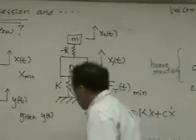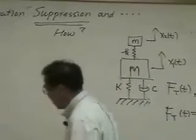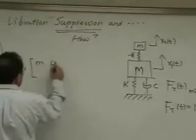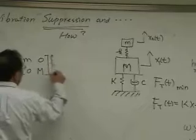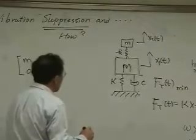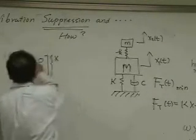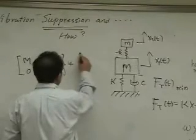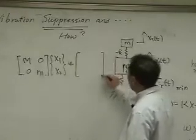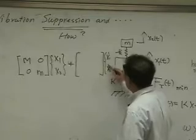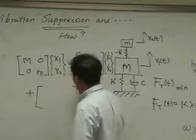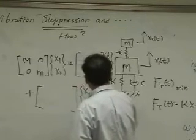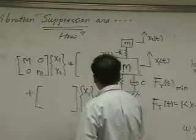Then we can set up the equation of motion. The mass matrix with M and capital M, times x1 and x2 accelerations, plus the damping matrix c times x1 dot and x2 dot, plus the stiffness matrix k times x1 and x2, equals the forces acting on mass 1 and mass 2.